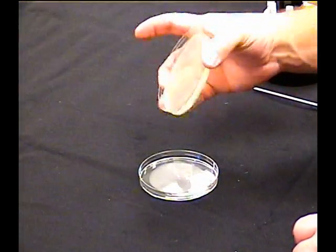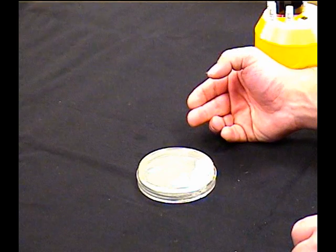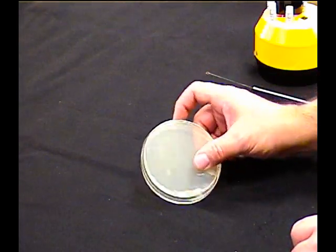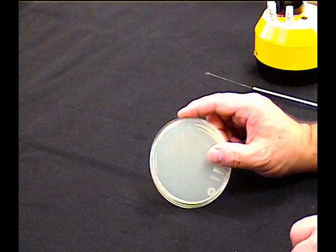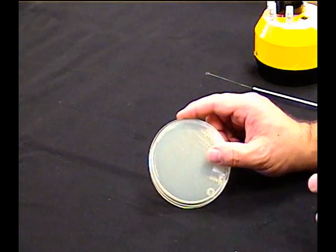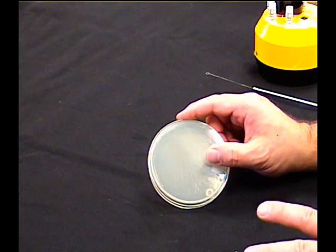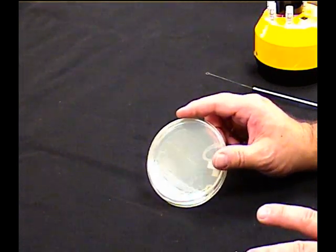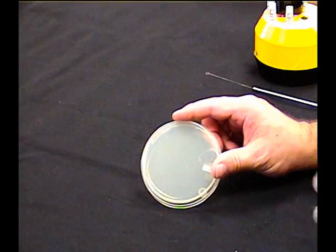Once you're done with that, put it lid down and write on the plate what the organism is and your initials. Do it now because once you get the filter paper discs on, you have to leave it right side up. If you don't leave it right side up, the discs fall off. If the discs fall off, it doesn't work so well.